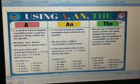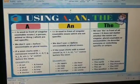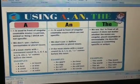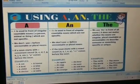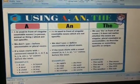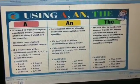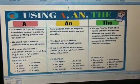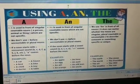An article points out which person or thing is being referred to. It tells us whether that person or thing is being mentioned in a general or a specific sense. There are three kinds of articles in English: they are 'a', 'an', and 'the'.